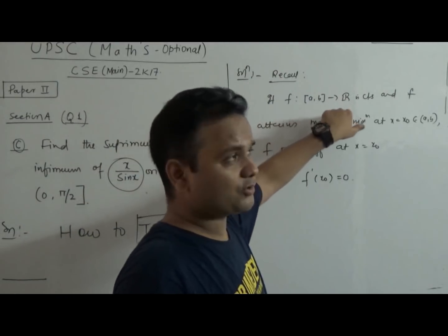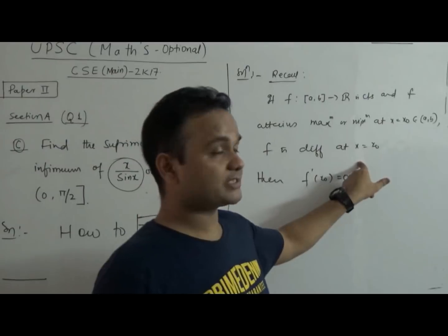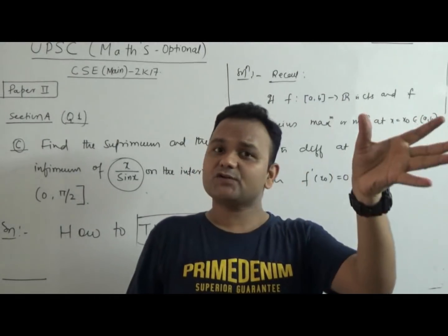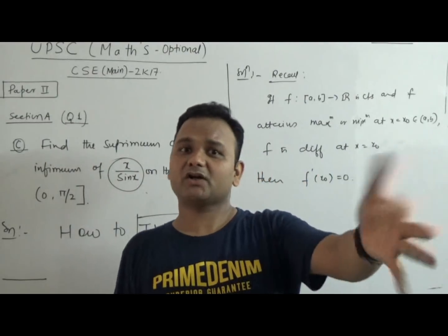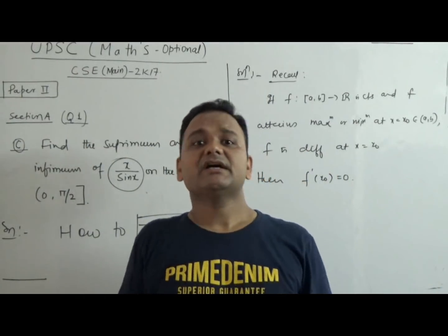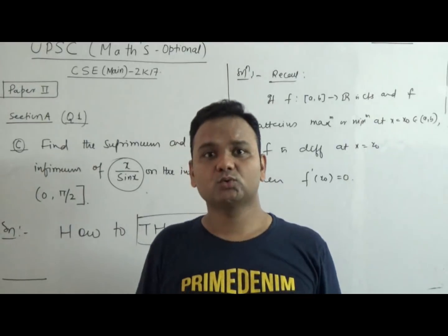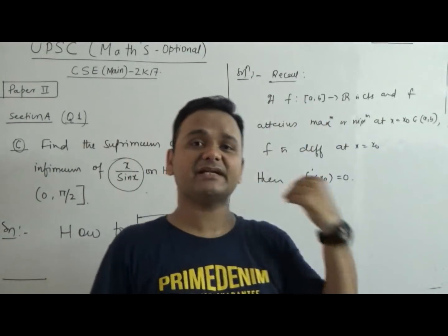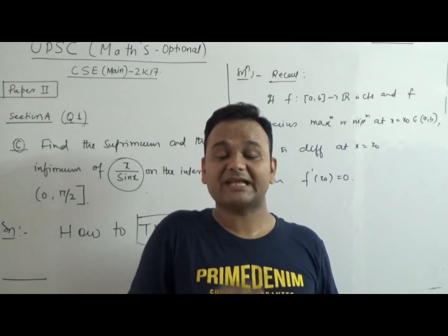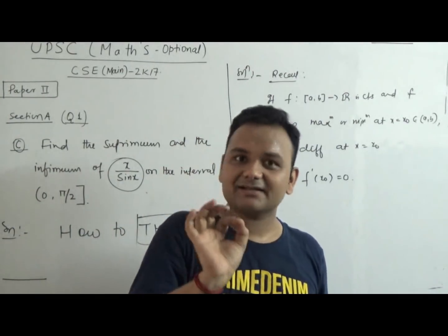Recall: f maps from [a,b] to ℝ, which is continuous, and f attains maximum or minimum at a point x equal to x₀. If that point is an interior point and f is differentiable there, derivative is zero. In 11th and 12th standard we assumed every point was an interior point of the real line, so derivatives were zero at max/min. But for an arbitrary interval we need to check whether the point is interior or not — that's the key difference between calculus and real analysis.